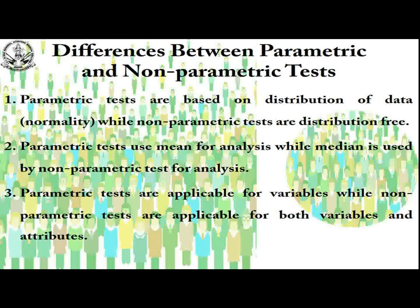Now we will see some differences between parametric and non-parametric tests. Parametric tests are based on distribution of data — that is normality — while non-parametric tests are distribution-free. Another difference: parametric tests use the mean for analysis, while non-parametric tests use the median. Parametric tests are applicable for variables only, while non-parametric tests are applicable for both variables and attributes. Here the question is: what is an attribute? Variables are characteristics which vary across the data, while attributes are specific qualities or features of a particular variable. In non-parametric tests, both variables and attributes are counted.